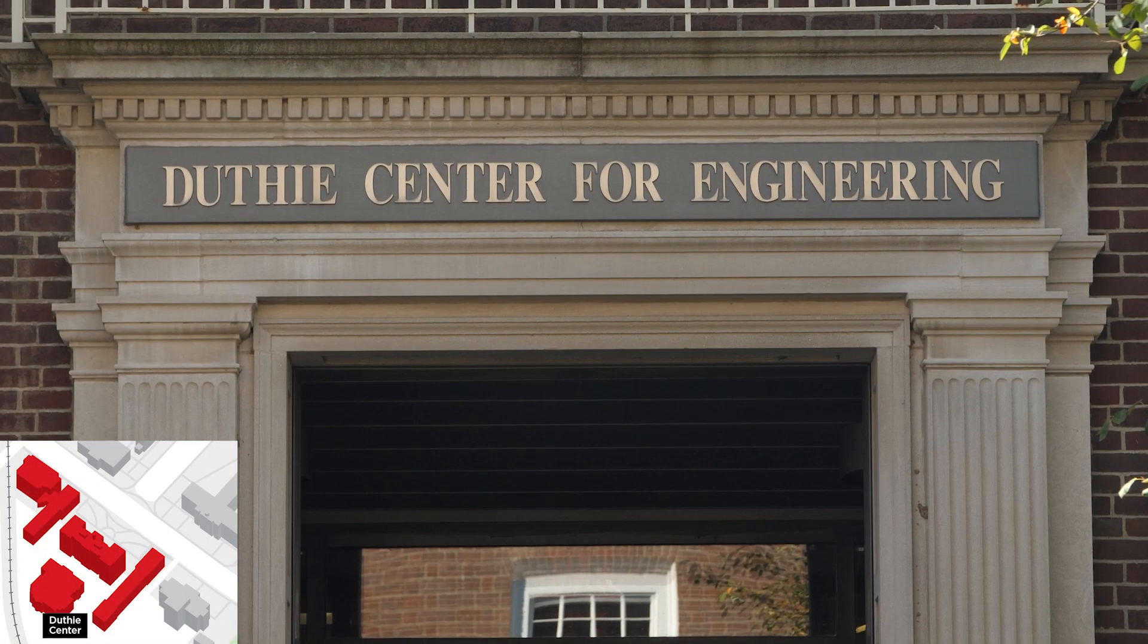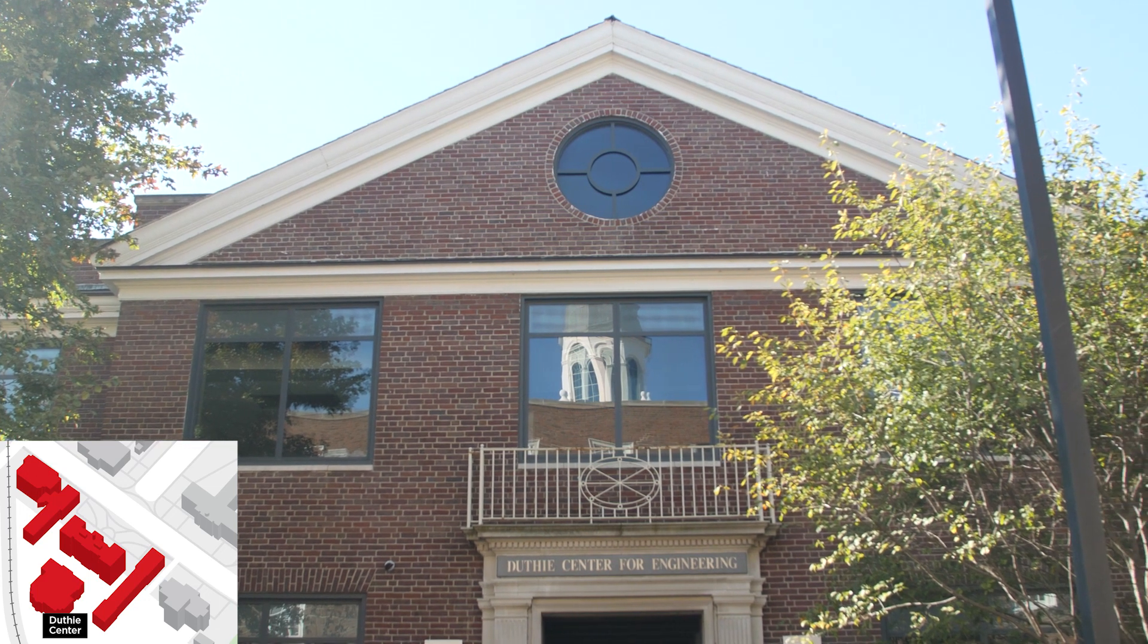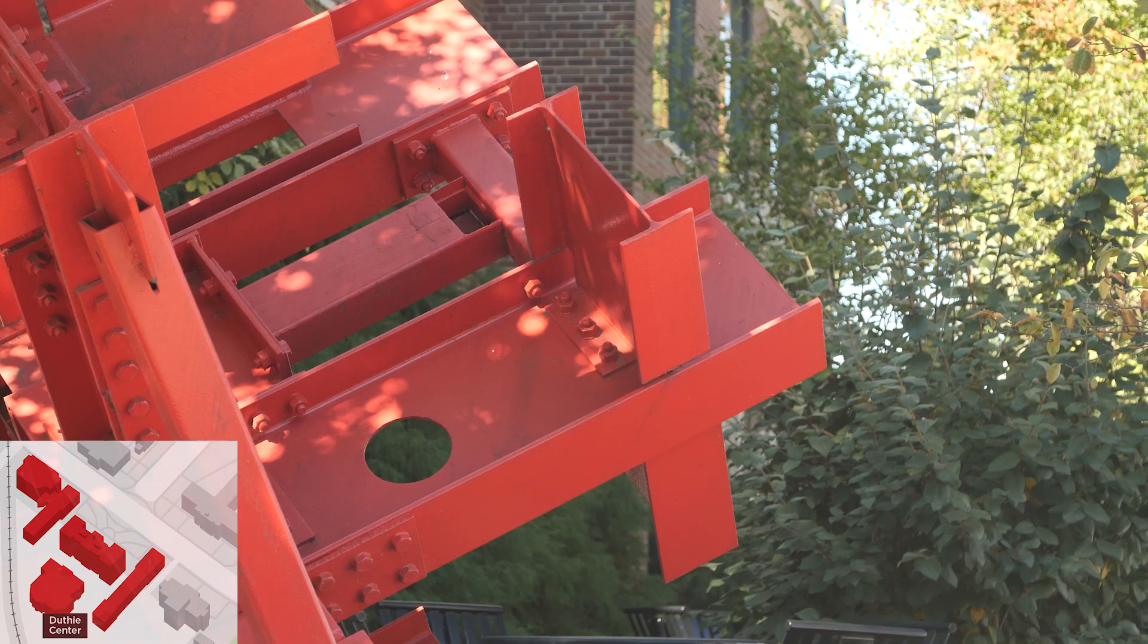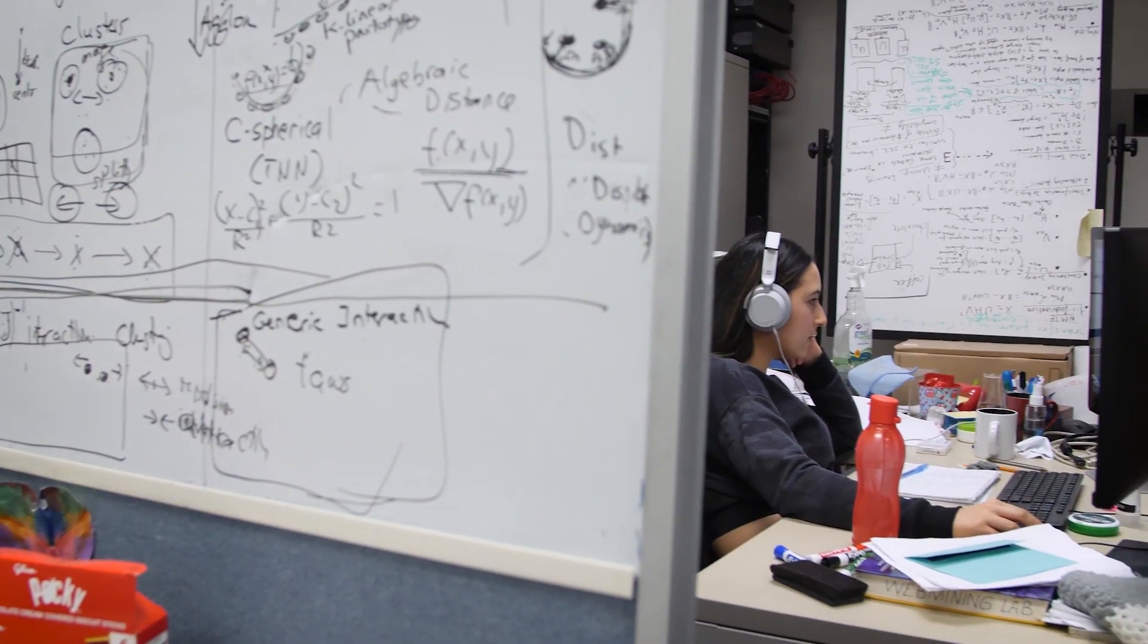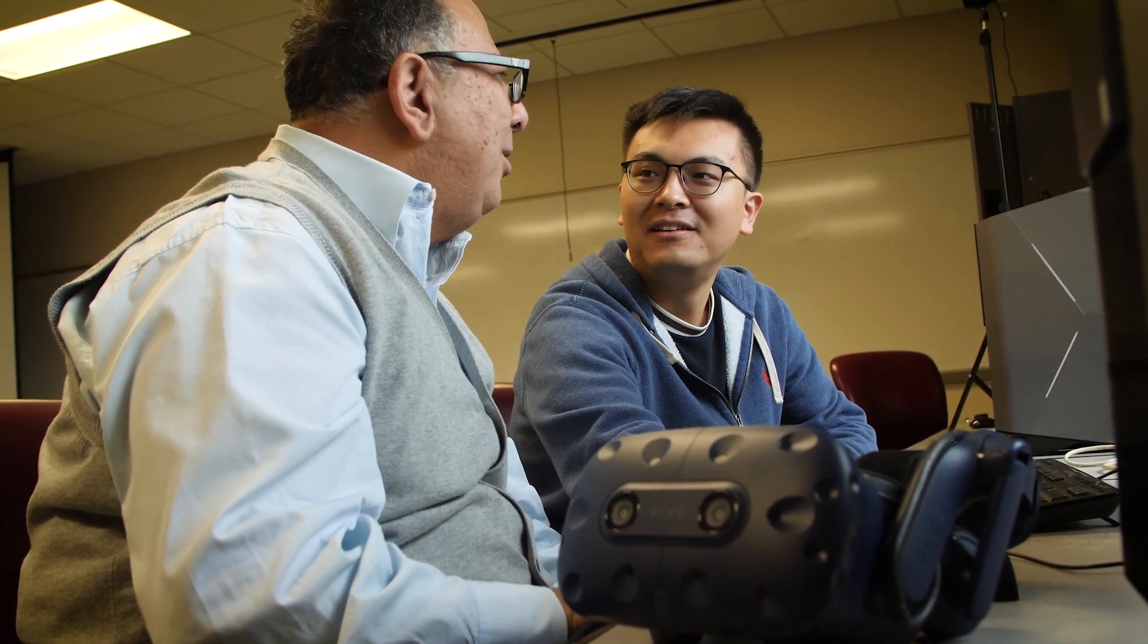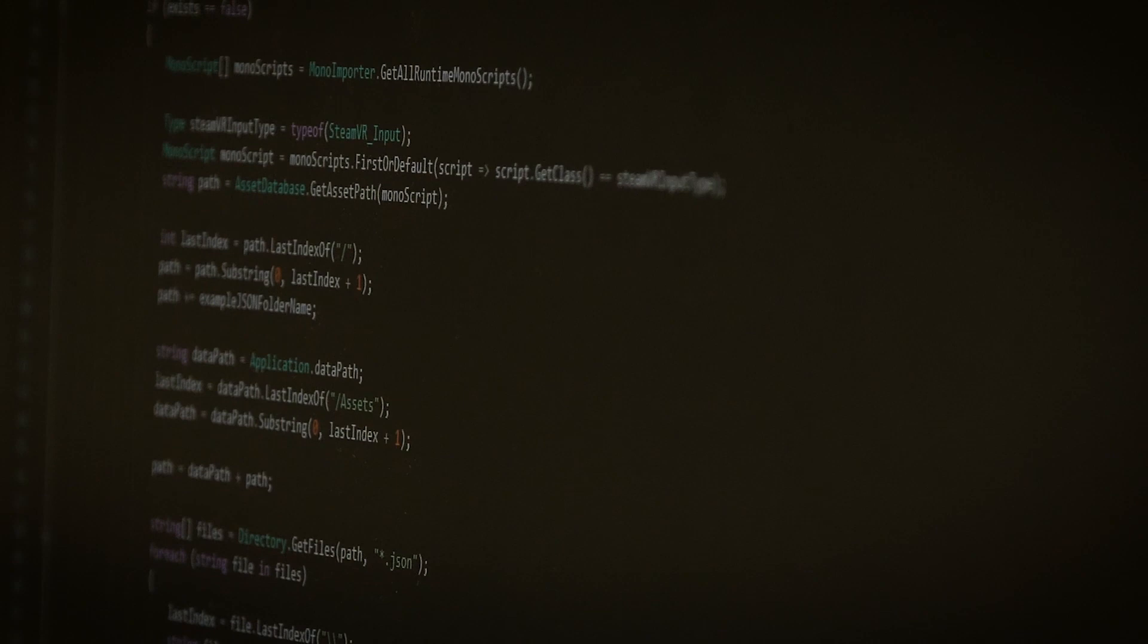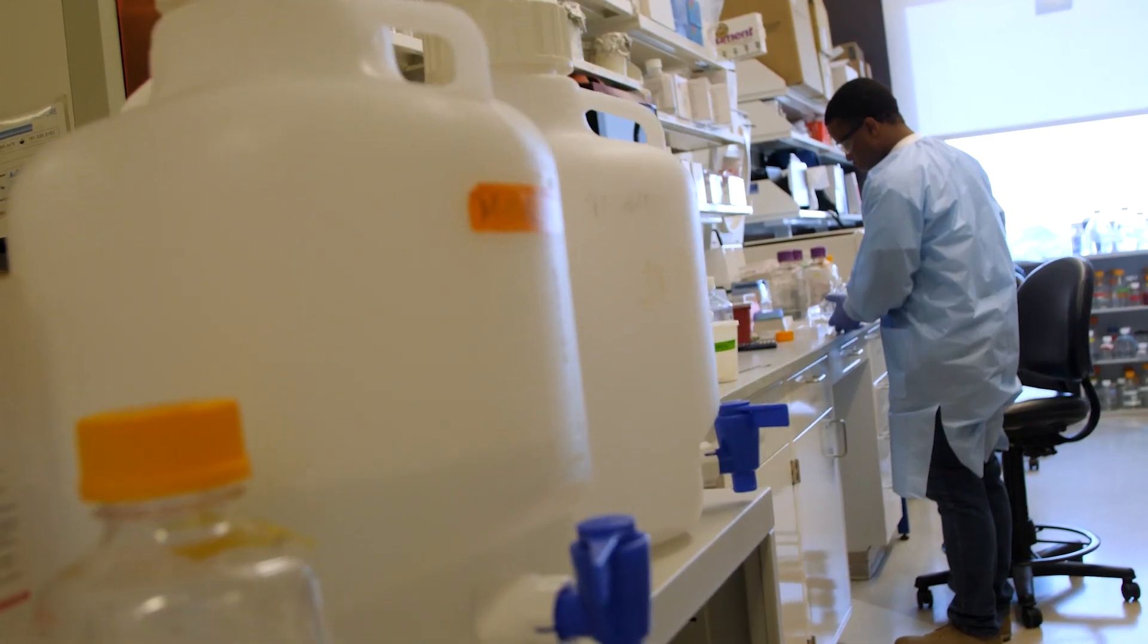This is the Duthie Center for Engineering. It houses our computer science and engineering department. Upstairs, we have designated labs just for our computer engineers. So if you're interested in software coding, this is definitely the discipline for you. This building also houses our co-op office. A co-op is where our students go out into industry and actually work for companies. The co-op office helps you navigate the entire process.